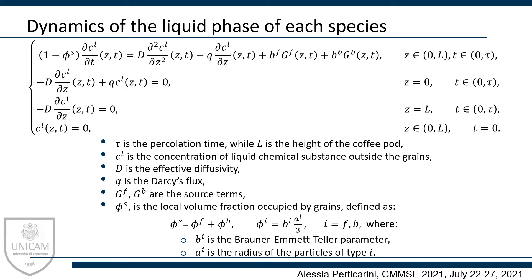In order to predict the final concentration of the substances extracted during the percolation process, we have to simulate the dissolution process for each chemical substance that we want to trace. Since we suppose that species don't affect each other, we only discuss one. The initial boundary value problem describes the dynamics of the liquid phase of a chemical substance during the process. We denote with C_L the concentration of the liquid chemical substance outside the grain that has been dissolved and is being transported by the water flow. The first equation of the problem is an advection-diffusion-reaction equation, and its right-hand side consists of a diffusive term, an advective term, and two reactive terms.